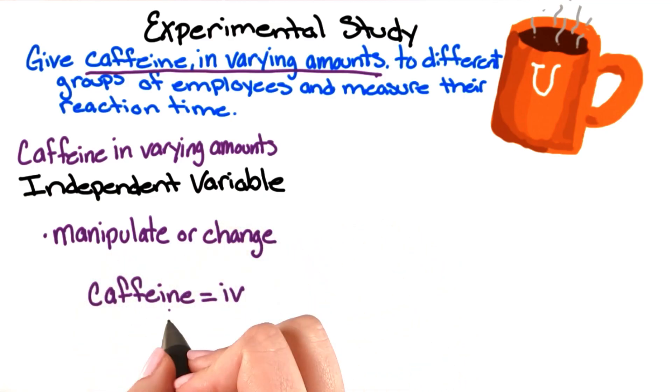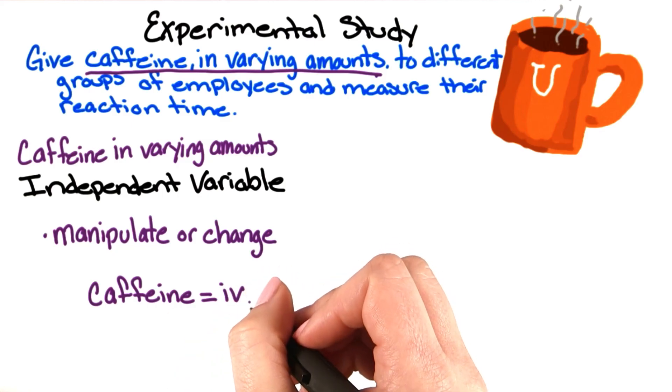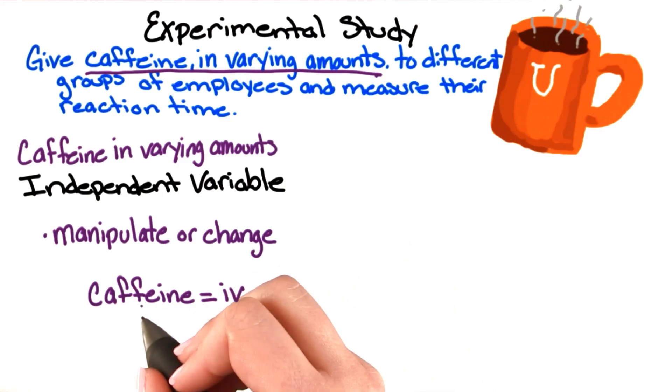In this case, caffeine is our independent variable, or IV for short, because we're changing the amount of caffeine each group gets.